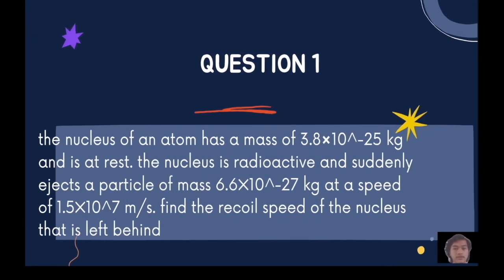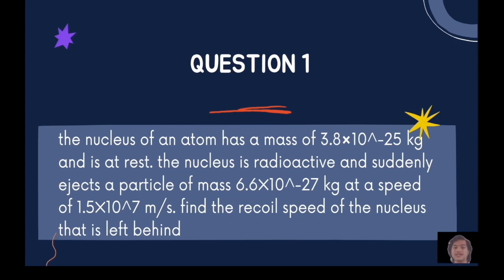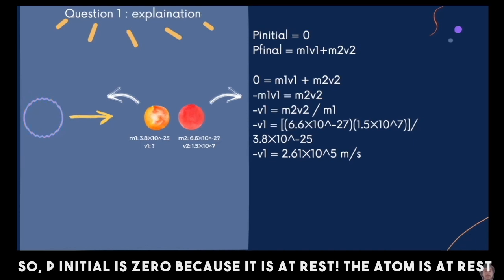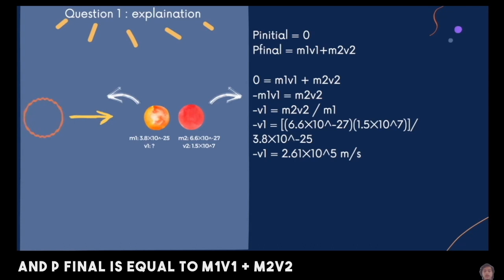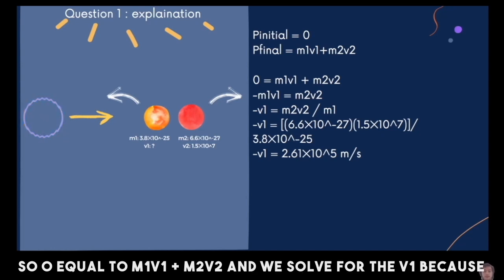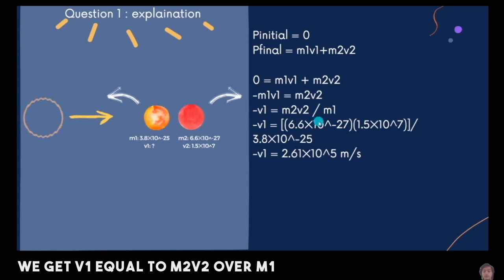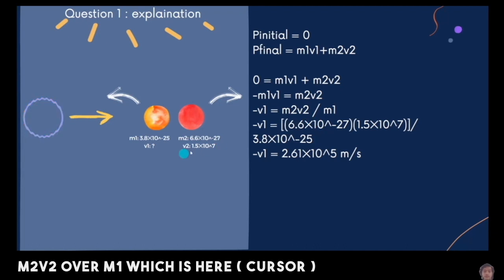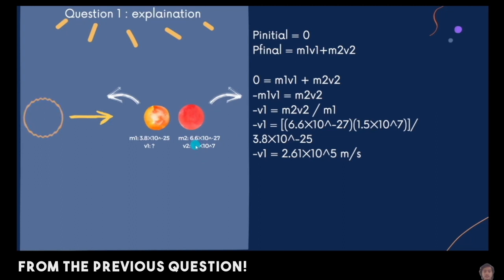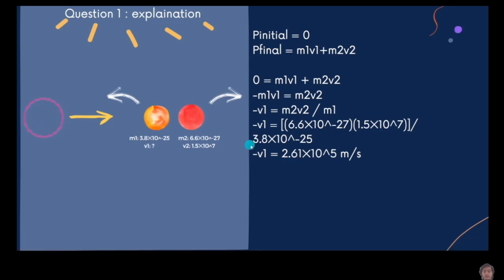Question 1: The nucleus of an atom has a mass of 3.8 times 10 to the negative 25 kilograms and is at rest. The nucleus is radioactive and suddenly ejects a particle of 6.6 times 10 to the negative 27 kilograms at a speed of 1.5 times 10 to the 7 meters per second. Find the speed of the nucleus left behind. Since the atom is at rest, P_initial is 0. So 0 equals M1V1 plus M2V2. Solving for V1: V1 equals negative M2V2 over M1, which gives negative 2.6 times 10 to the 5 meters per second.